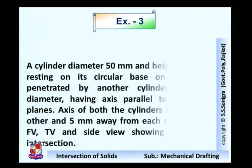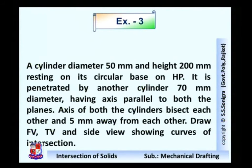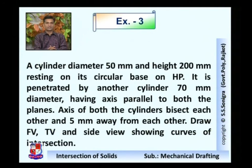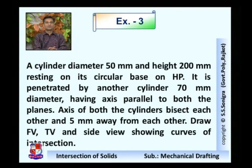Now, example number three. The data is given: a cylinder of diameter 50mm and height 200mm resting on its circular base on a horizontal plane. It is penetrated by another cylinder of 70mm diameter having axes parallel to both planes. The axes of both cylinders bisect each other and are 5mm away from each other — this is a new condition in this case. Draw the front view, top view, and side view showing curves of intersection. The given data shows two cylinders — one smaller, one bigger — having different diameters, with axes at right angles but offset by 5mm from each other.